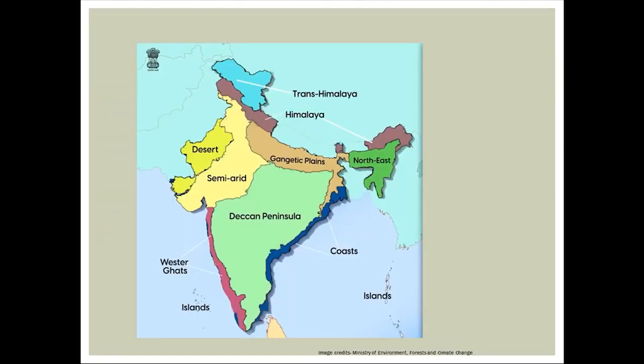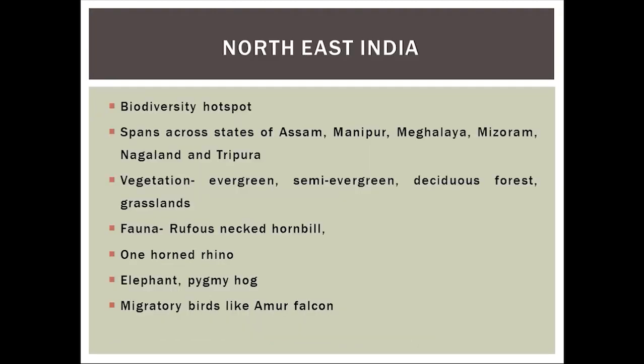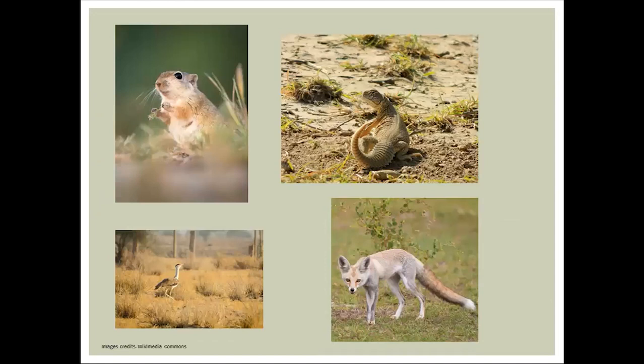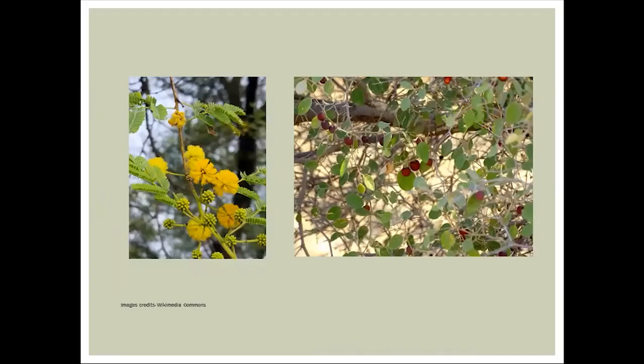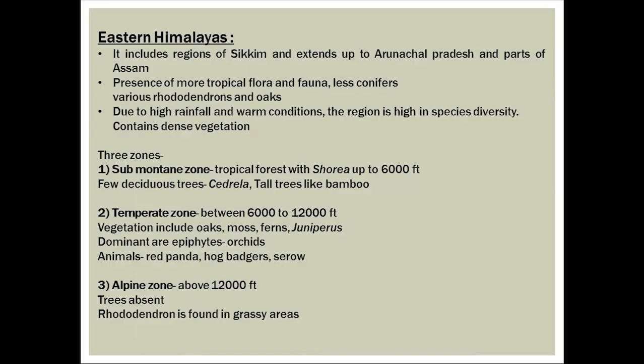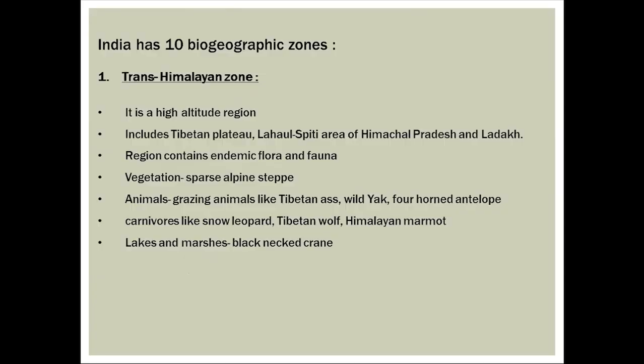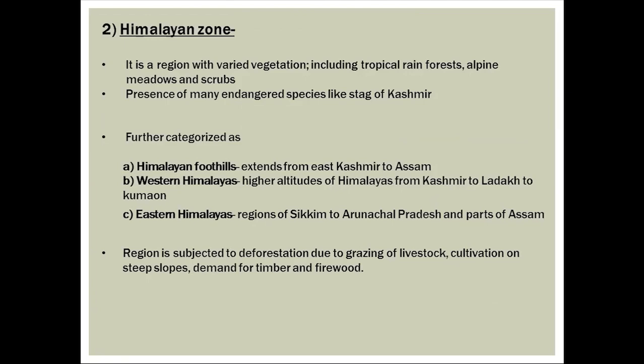Let us look at the ten biogeographic zones discussed in these lectures. We initially discussed the Trans-Himalayan zone, in the northernmost part of the country. Animals like snow leopard and black-necked crane are found there, with sparse alpine steppe vegetation.